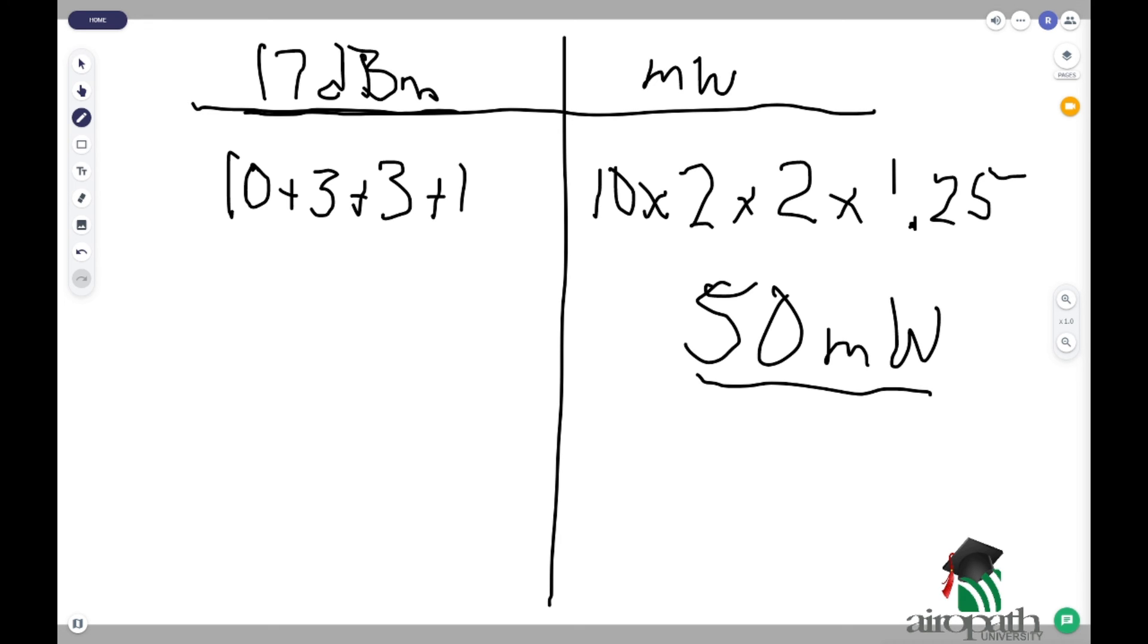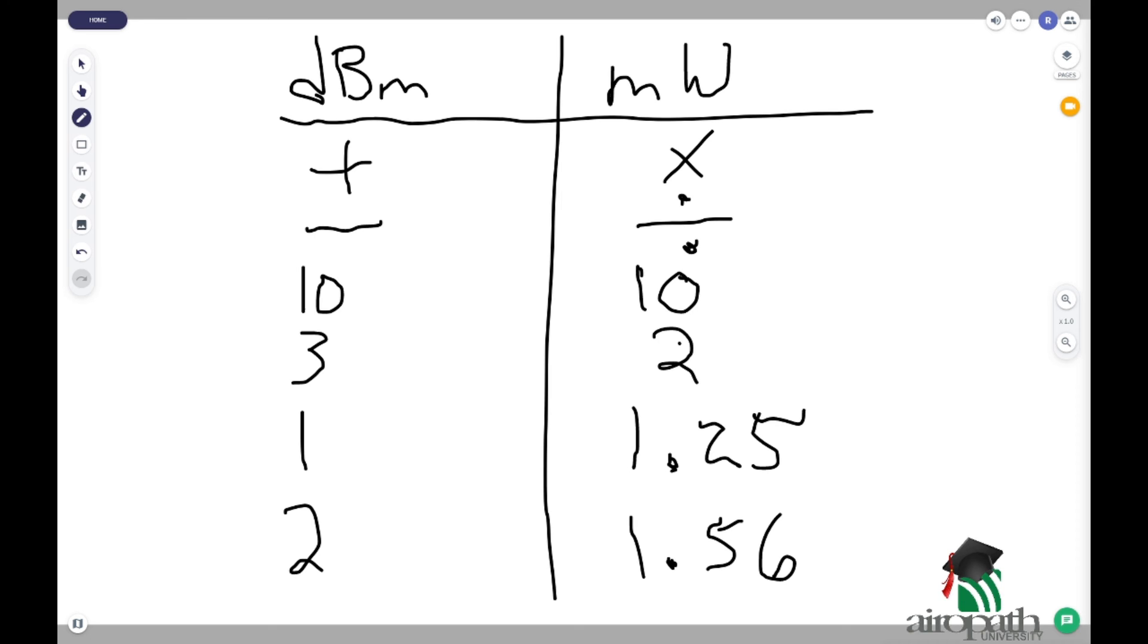So, the big key to this method is just remembering this chart and this rule set. So, every time we do an addition on the dBm side, we have to do multiplication on the milliwatt side. Anytime we subtract a value from the dBm side, we have to divide those values equally on the milliwatt side.